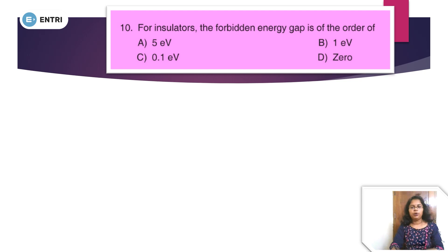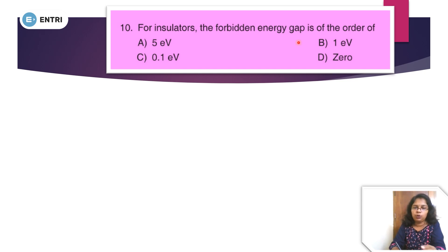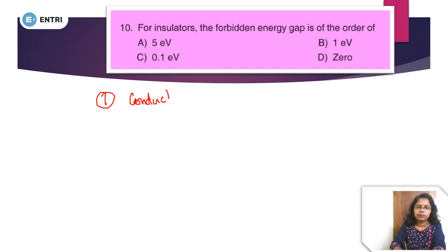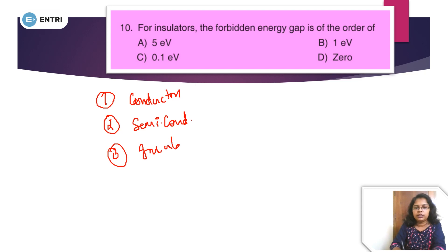Question number 10: For insulators, the forbidden energy gap is of the order of? Materials are classified into three types: conductors, semiconductors, and insulators. This is a topic of electronics and material classification.